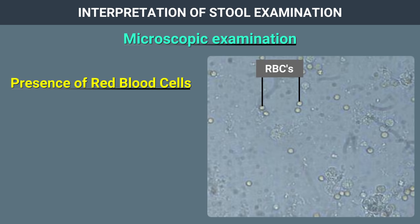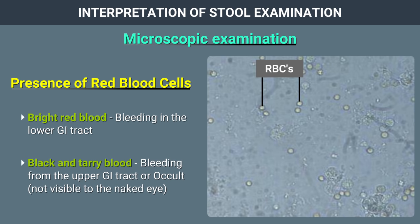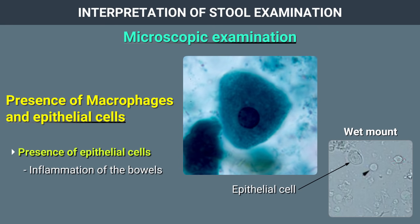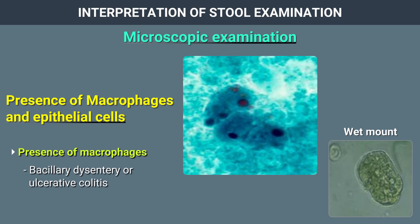Presence of red blood cells in the stool: blood in stool can be bright red from bleeding in the lower gastrointestinal tract, or black and tarry from bleeding from the upper gastrointestinal tract, or occult, which is not visible to the naked eye. Causes of blood in stool can be hemorrhoids, GI tract malignancies, and dysentery. Presence of macrophages and epithelial cells: presence of epithelial cells is indicative of inflammation of the bowels, and presence of macrophages is indicative of bacillary dysentery or ulcerative colitis.